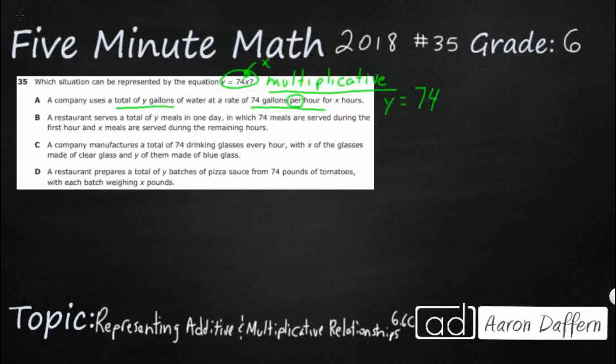Whenever we see a rate, or we see per, in this case, we actually see both. We see a rate, and we see that word per. Both of those are really big clues that we are going to be dealing with multiplication.